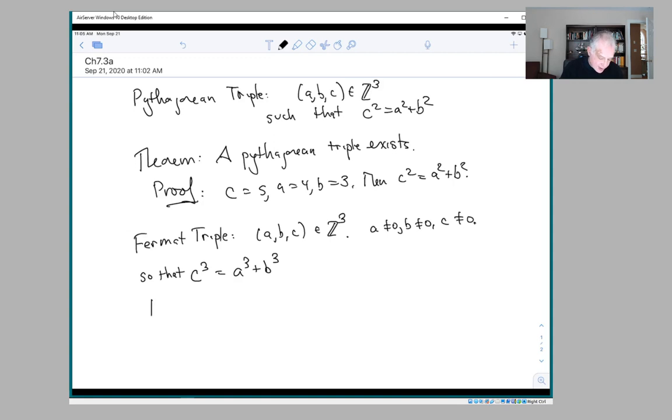So the theorem is: no Fermat triple exists.